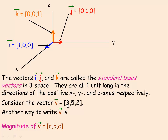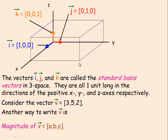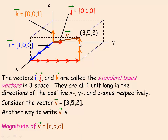So for example, if we consider the vector (3, 5, 2) — another way to write that vector, which makes it look more 3-dimensional: 3 means you go 3 in the i direction, then 5j's in the j direction, and then 2k's in the k direction. So that would be the vector (3, 5, 2). Another way to write vector v, instead of component form (3, 5, 2), is 3i + 5j + 2k. That's how you get from the tail to the head of the vector by going along the i, j, and k vectors. This is called standard basis form.